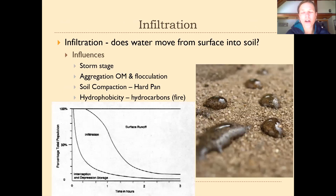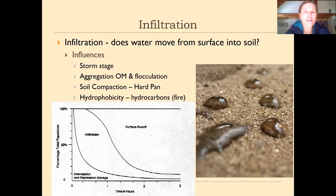Once water gets into the soil, we can think about how it moves around. But before it even gets into the soil, it has to perform what we call infiltration — the movement of water from the surface into the soil medium itself. Sometimes there might be things that prevent that from happening. We've talked a little about that in the case of erosion and compaction. The way the storm occurs and the stage of the storm might also influence whether water falling from the sky can infiltrate the soil or not.